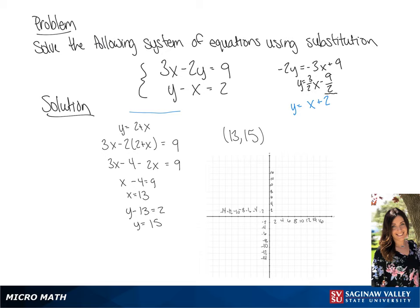We're going to graph the first equation using the y-intercept, which is negative 9 halves. Then we're going to use the slope to draw the second point and graph our line.